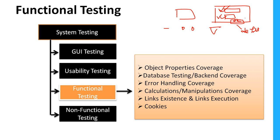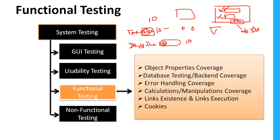Another example is a travel application where you select source and destination. If source has 10 locations and destination also has 10, when you select a country as the source — say India — that same country should not appear in the destination list. So the destination dropdown automatically reduces by one option. This is another example of object properties changing dynamically at runtime, which we need to verify as part of object properties coverage.